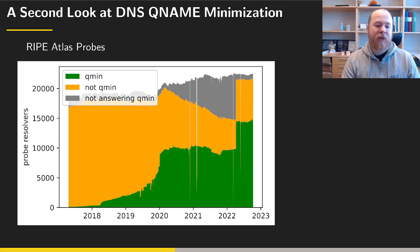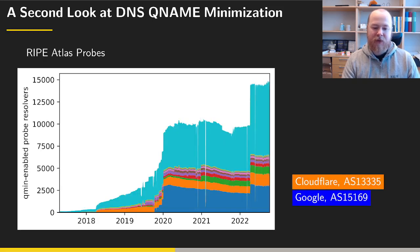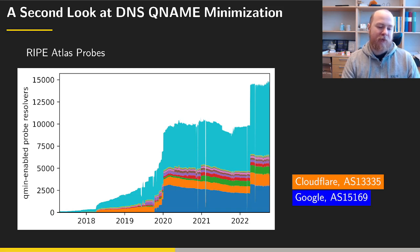The rapid adoption in late 2019 and early 2020 prompted a deeper dive into the characteristics of resolvers used by these probes. Looking at the ASN of these resolvers, we found that in late 2019 many minimizing resolvers came from Google's ASN. We can also see Cloudflare in orange, whose adoption began in mid-2018 and continued through 2019, as pointed out in the previous study.